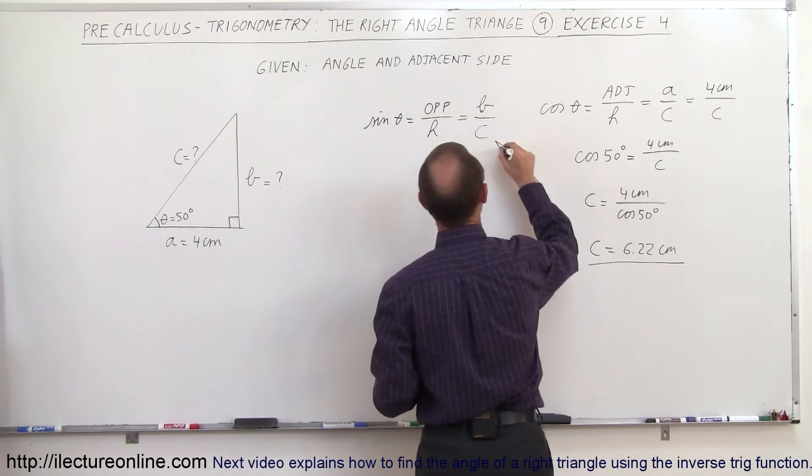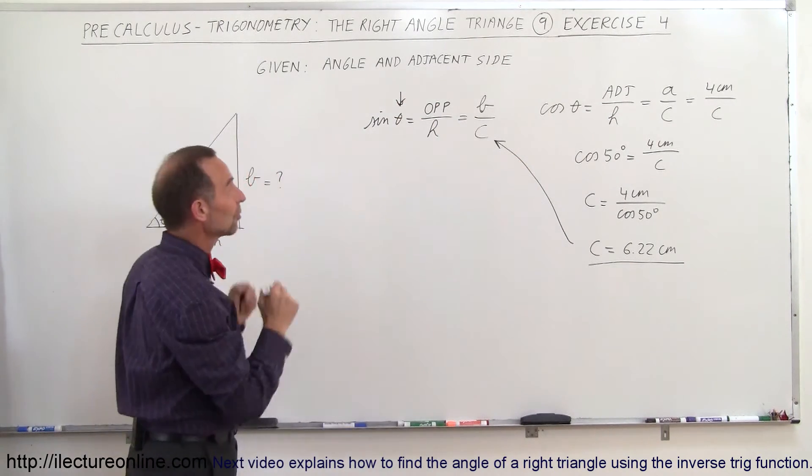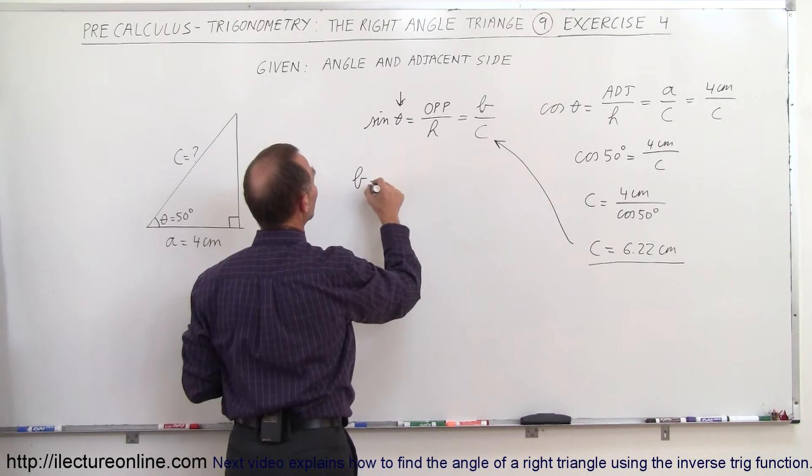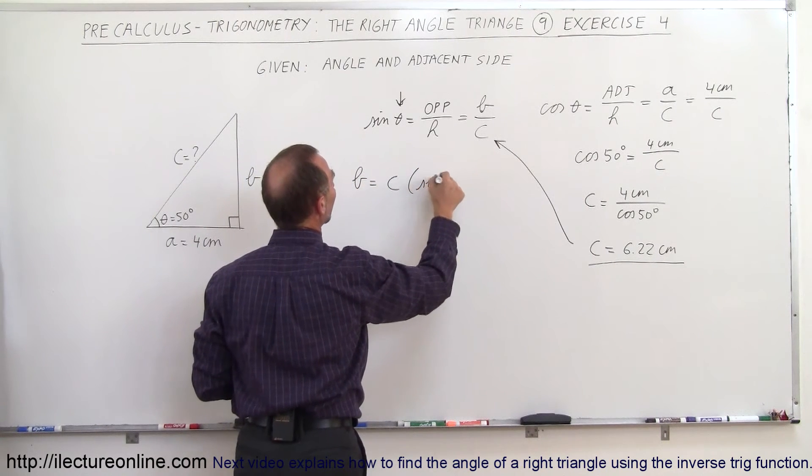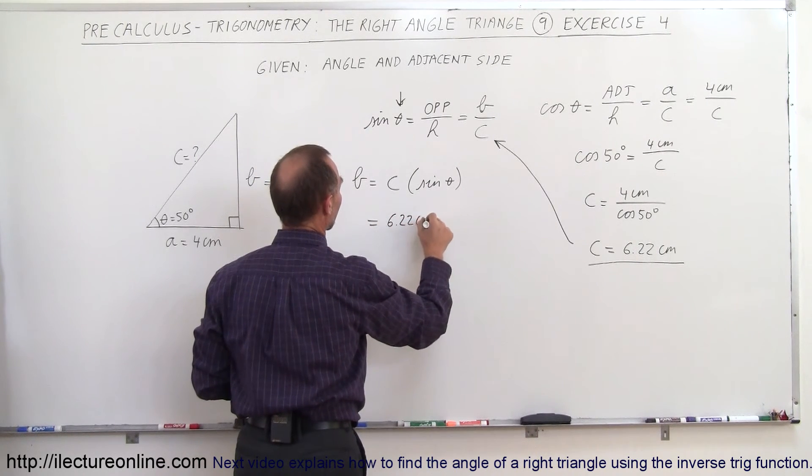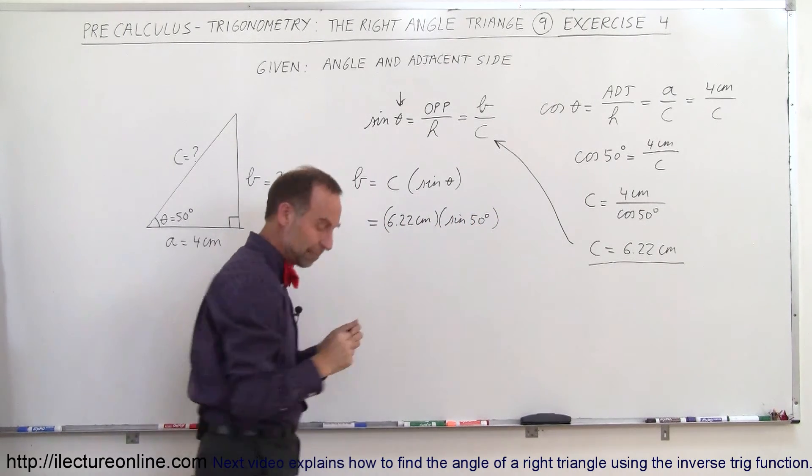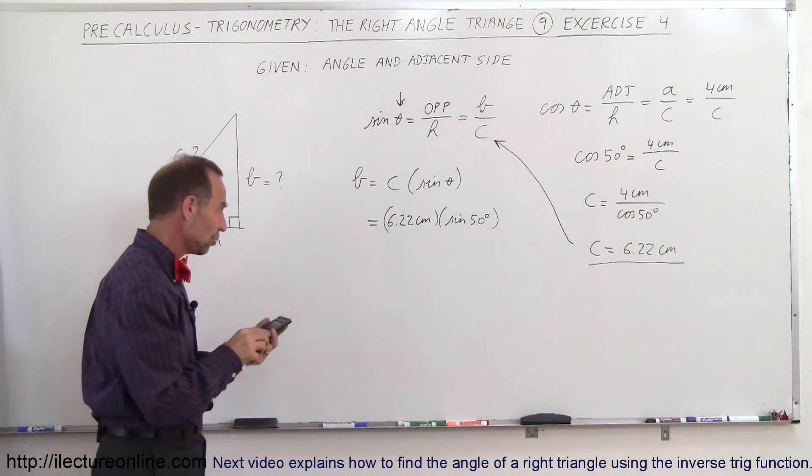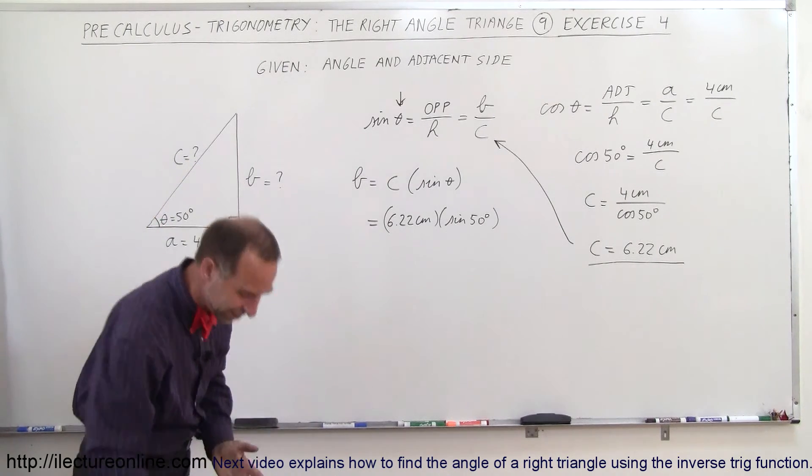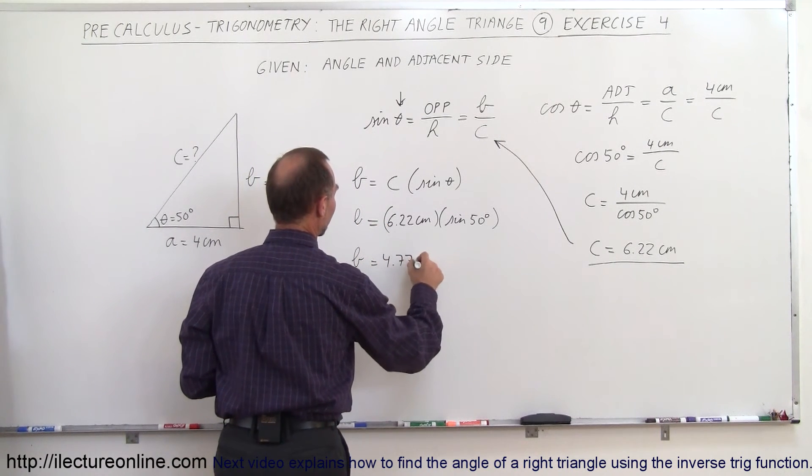Now that I know C, I can go back over here and say I know C. I know the angle, so both of these are known. Now I can solve for the equation on the left. Since I know I need to figure out what B is equal to, I can write that B is equal to C times the sine of theta. C is known, 6.22 centimeters. I multiply it times the sine of 50 degrees. And that should enable me to find B. So I grab my 6.22, and I multiply it times the sine of 50, equals, and it's 4.77 centimeters. So B is equal to 4.77 centimeters.